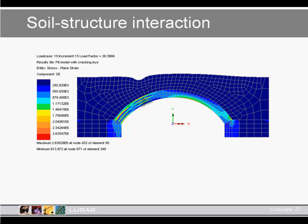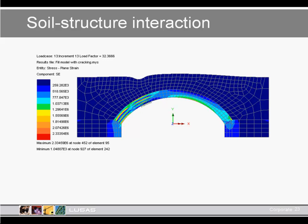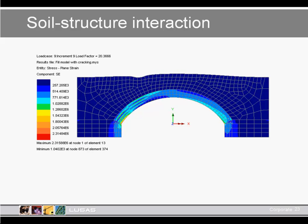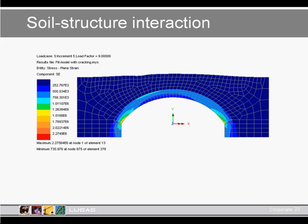With soil included, what was a 12-tonne failure in the first model is now pushed up to about 41 tonnes, giving much more confidence in the structure. Progressively, what we're doing here is going step by step — don't jump in and do this at day one. Do the simple models first, then grow towards this. These are quite complex nonlinear models, but when you gain confidence you can easily reach this level of modelling complexity.